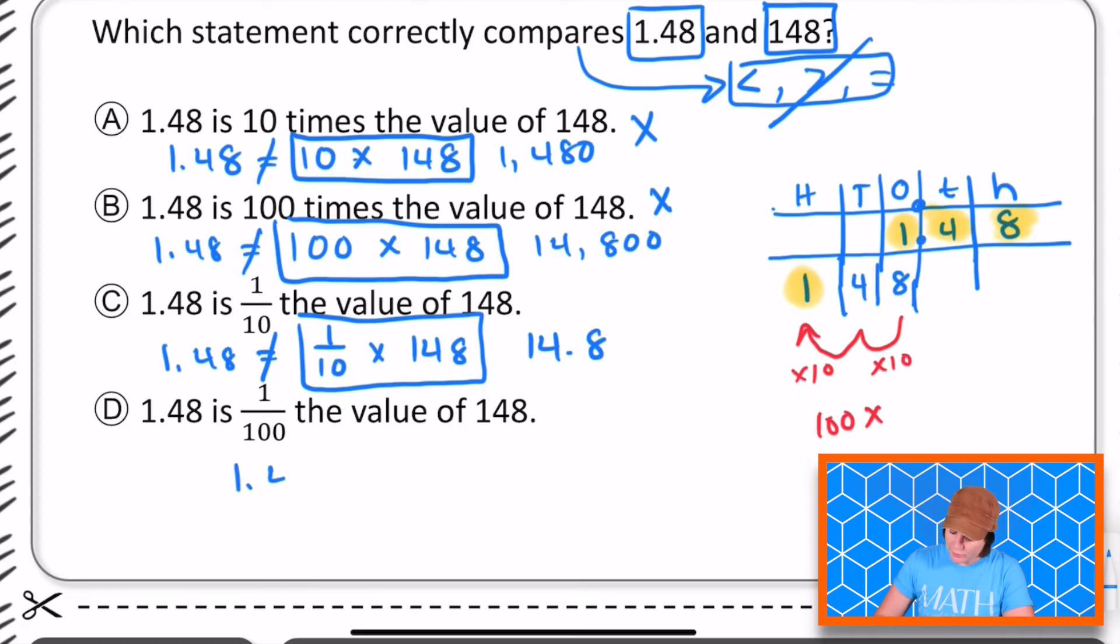So 1.48 is 1/100 the value of 148. So now if I'm solving this right here, yes, we're going to make it smaller and we are going to make each digit go back two times, which would make it equal to 1.48. So yes, D is our correct answer.